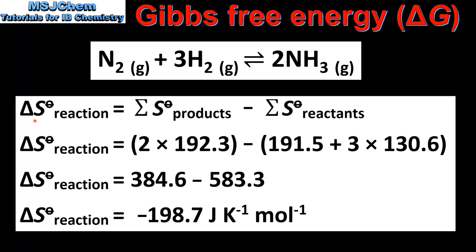Let's start by calculating the entropy change for the reaction. Using this equation, the entropy change equals the sum of the absolute entropy values of the products minus the sum of the absolute entropy values of the reactants. We input the absolute entropy values, not forgetting to multiply by the coefficient in the balanced equation. This gives us a standard entropy change of negative 198.7 joules per Kelvin mole.